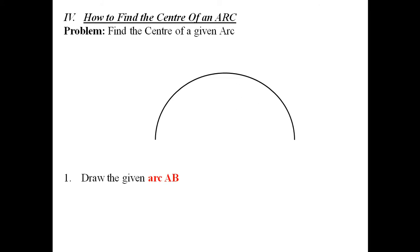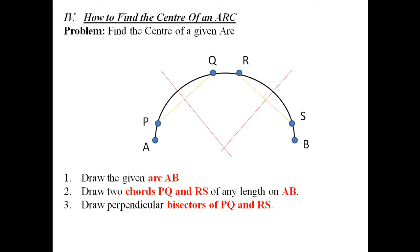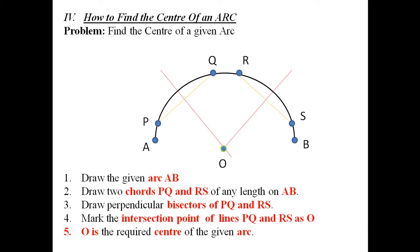The next problem is how to find the center of an arc. Given arc AB, draw two chords PQ and RS of any length within the arc. Bisect PQ and RS. These bisecting lines will intersect each other at point O, which is the required center of the given arc AB.